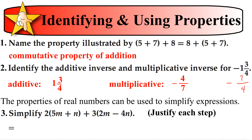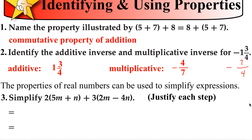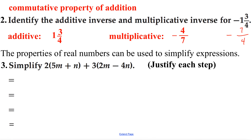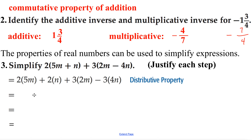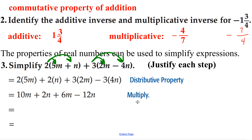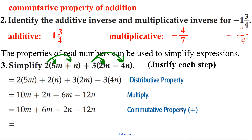The properties of real numbers can be used to simplify expressions. First we use the distributive property because we have parentheses — we multiply 2 times 5m and 2 times n, distributing everything on the outside to everything on the inside. Then we multiply it out, and the justification is just 'multiply.' Next we get our like terms together by switching terms — that's the commutative property, which allows us to change the order. Then we add like terms and that's our final answer.